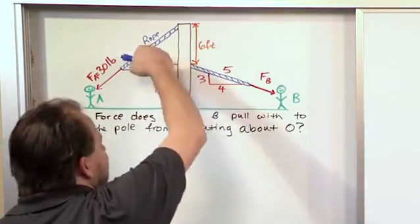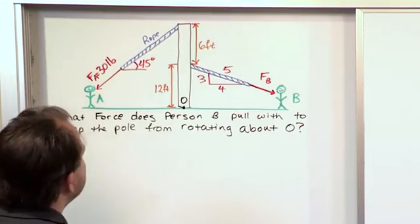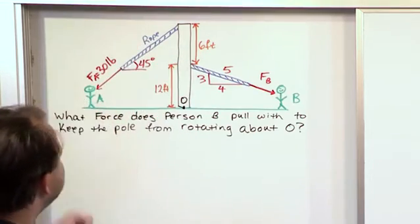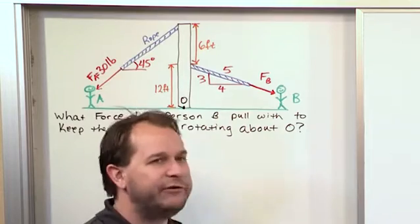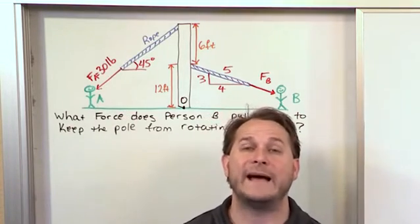So this guy's going to have to pull to counteract that. And what you really need to realize is this rope is causing a moment here, this rope is causing a moment here, and we just need to figure out how they balance each other.